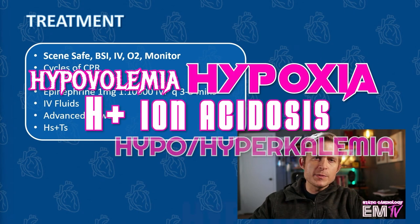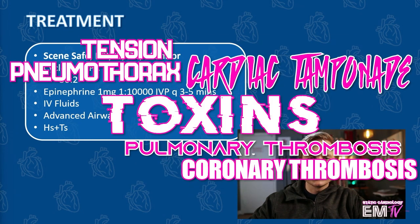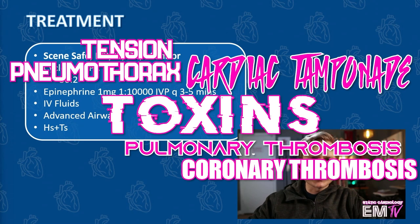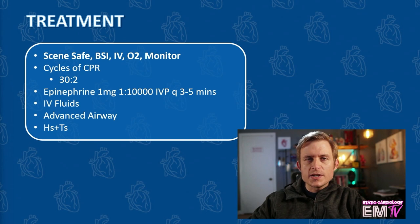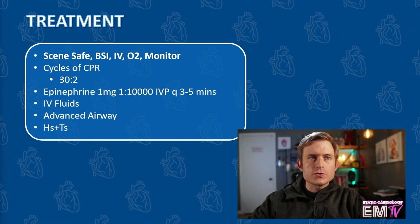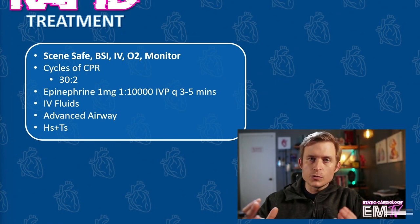I'll then consider my H's and T's, which are hypovolemia, hypoxia, hydrogen ion acidosis, hypo and hyperkalemia, hypothermia, tension pneumothorax, cardiac tamponade, toxins, and a pulmonary or coronary thrombosis. In the context of trauma, it's very likely that this arrest was being caused by hypovolemia, so I would stress fluid replacement, perhaps TXA administration, and if the patient meets criteria, whole blood. And then of course, rapid transport.